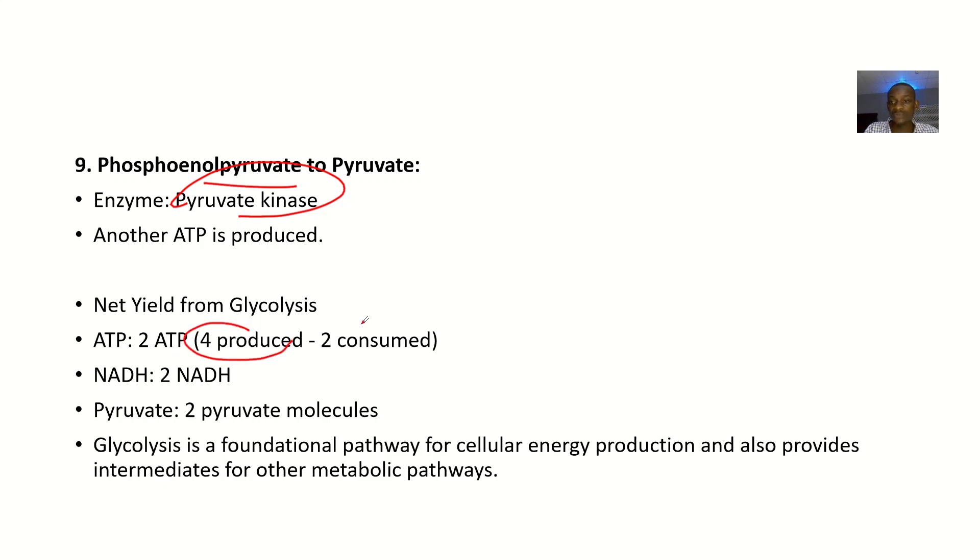During the process, 4 ATPs are produced while 2 ATPs are consumed, so a total of 2 ATPs are left. 2 NADH are produced and 2 pyruvate molecules are produced.